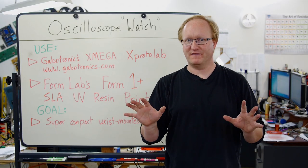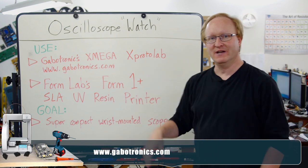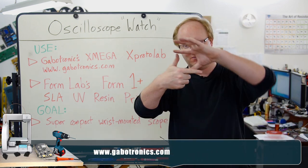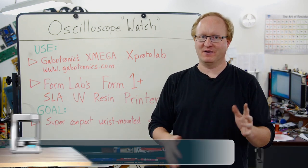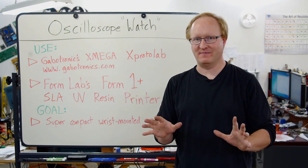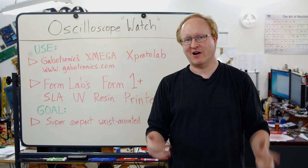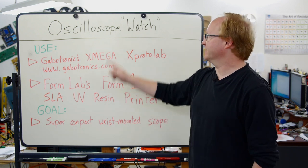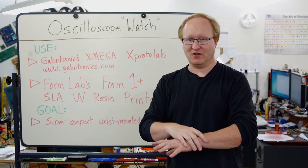A few years ago at Maker Faire New York, I came across the Gabatronics X-Mega X-Protolab, which is this kit that allows you to put together a very small oscilloscope. It's like that small. I always thought it would be cool to make a watch out of it, but I never got around to finding the right battery pack. Recently, we did a battery episode and that inspired me to finally finish this idea. So in today's episode, we're going to try to build an oscilloscope watch.